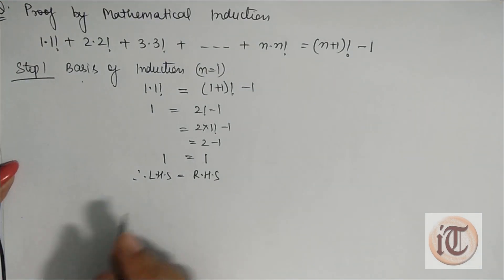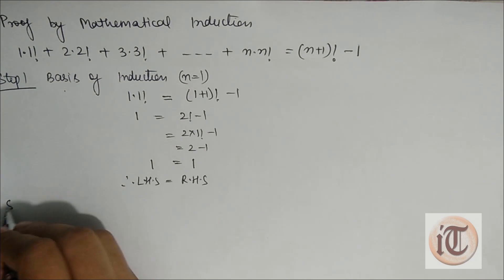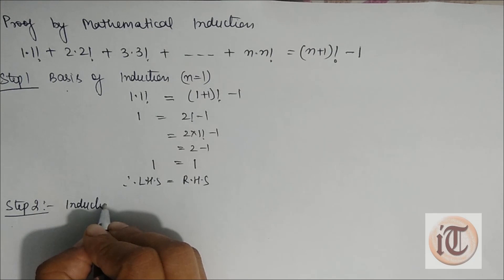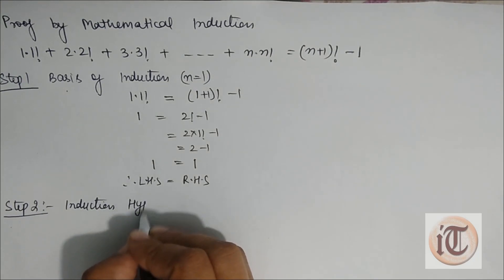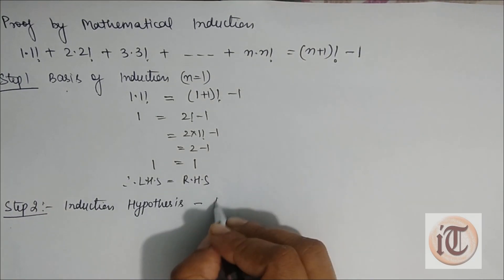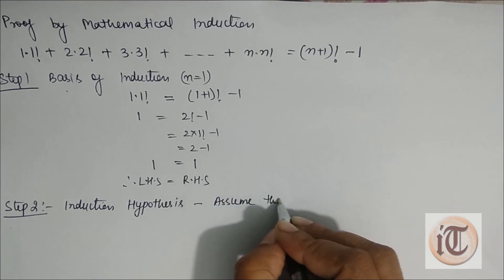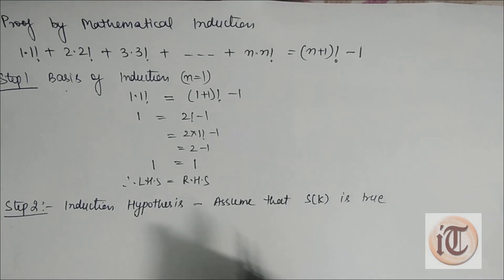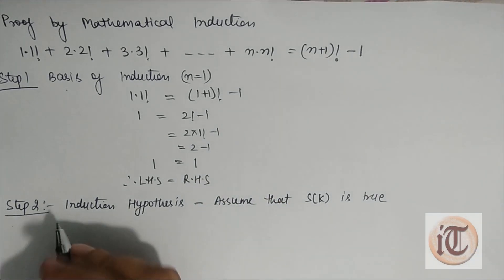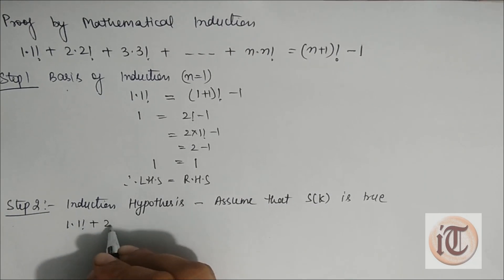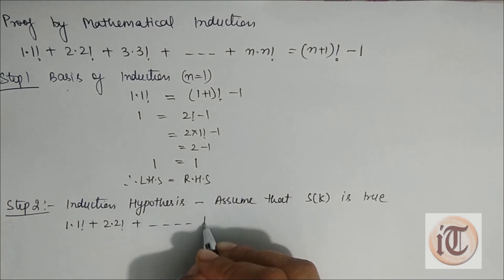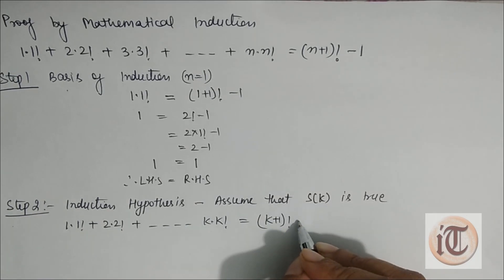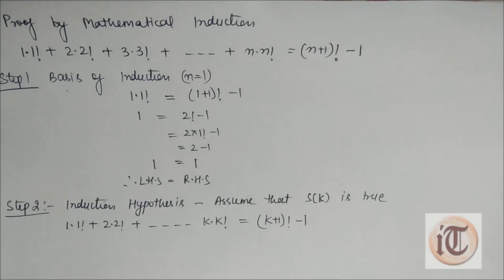Step 2 is induction hypothesis, in which we assume that S(K) is true. This means instead of n we place K: 1·1! + 2·2! + ... + K·K! = (K+1)! - 1. We assume that this statement is true.